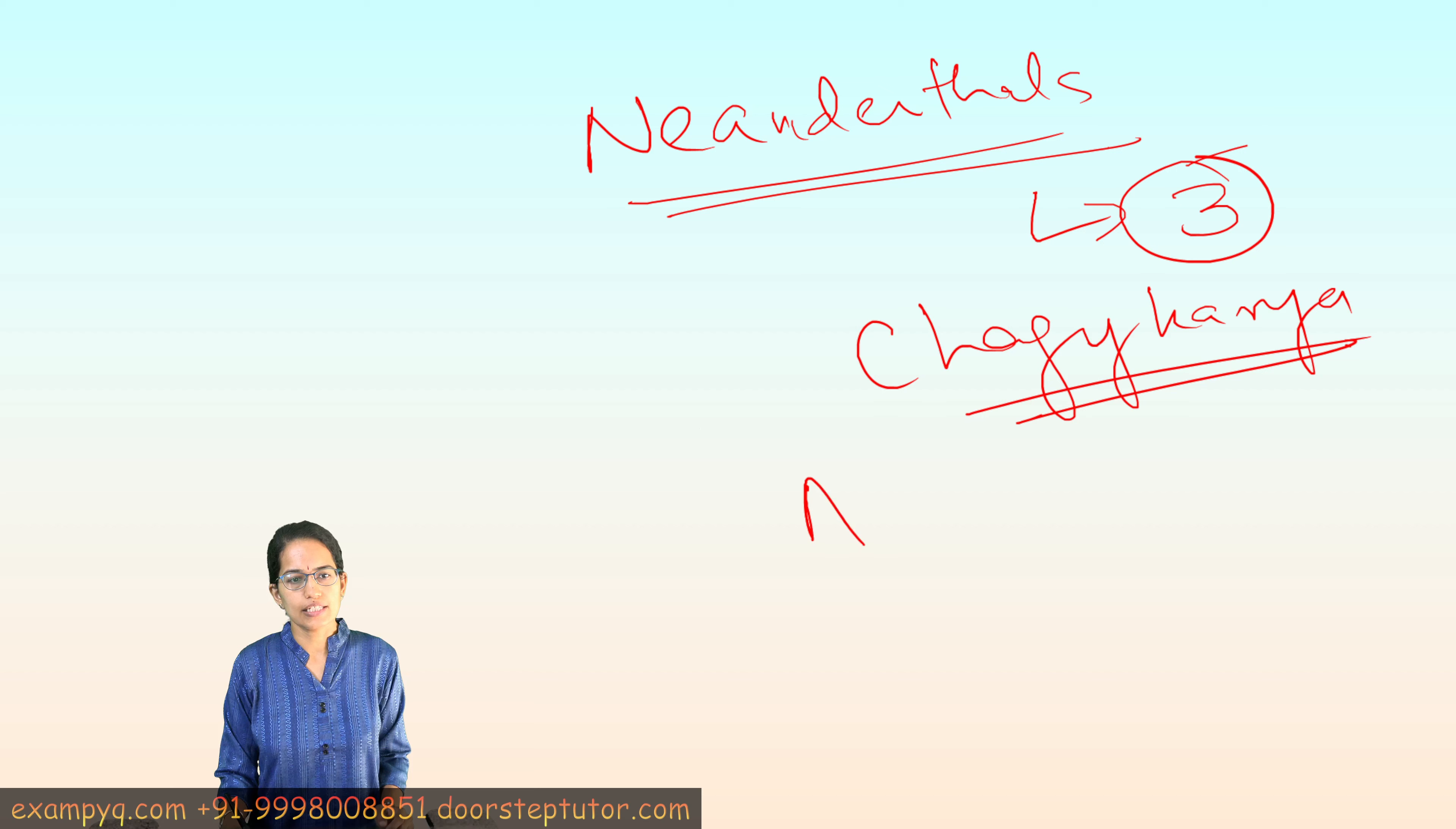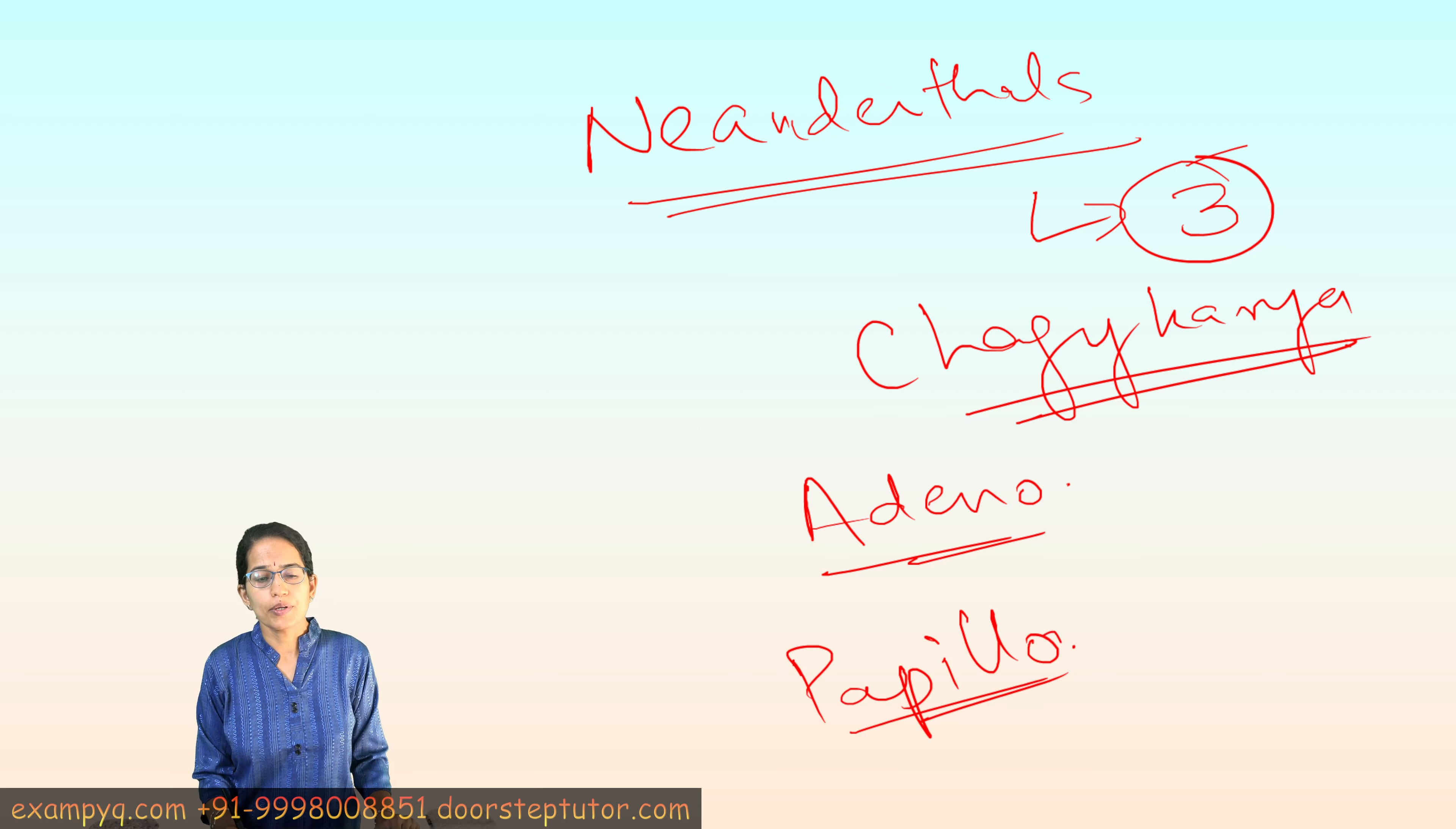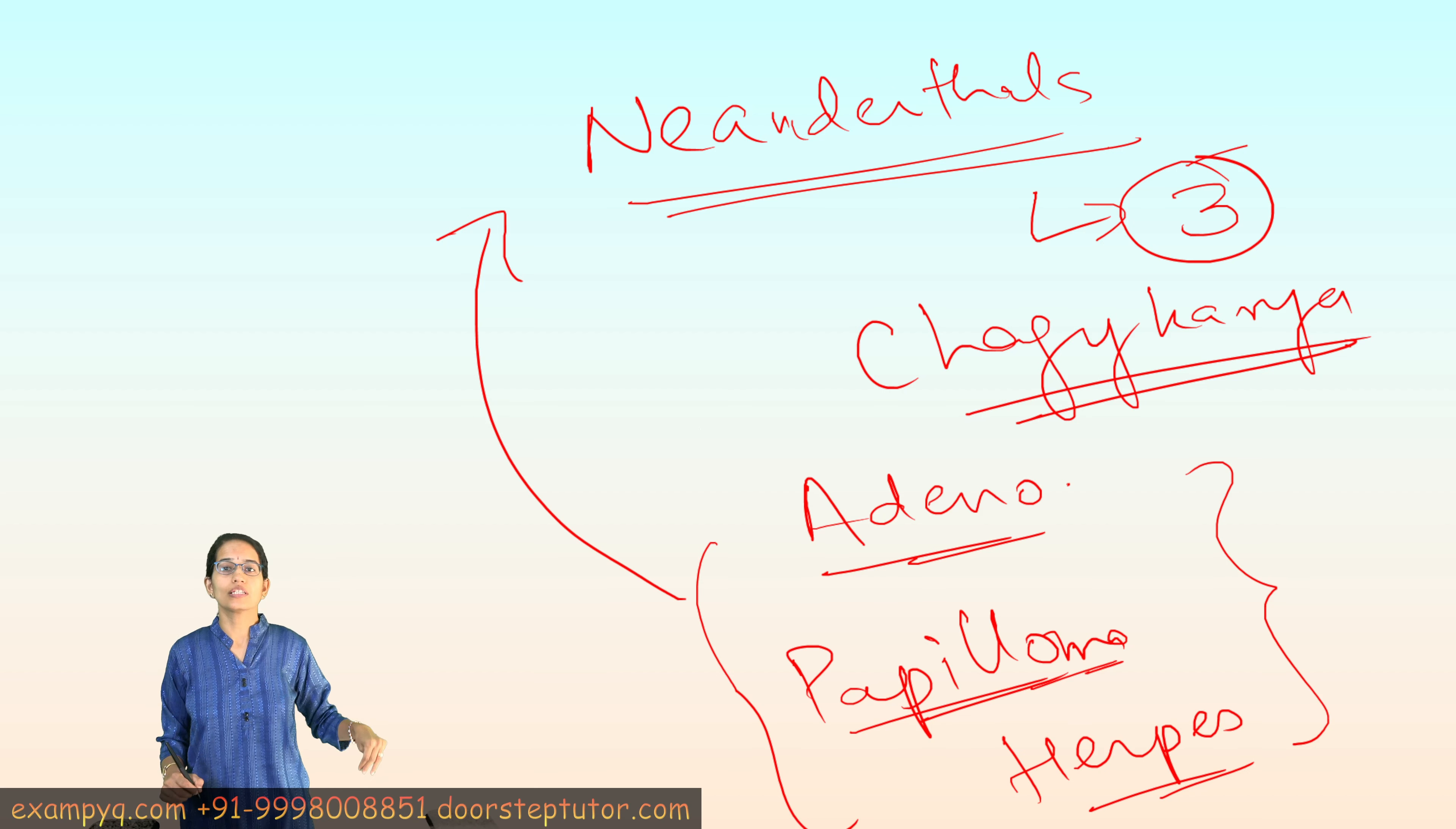These three viruses are important. The first one is the Adenovirus that causes cold and flu-like symptoms. The second one is the Papillomavirus and this causes cancers and genital warts. The third one is the Herpes virus and this causes cold sores, chicken pox and mononucleosis. These three viruses infected Neanderthals and are also seen in the present time.